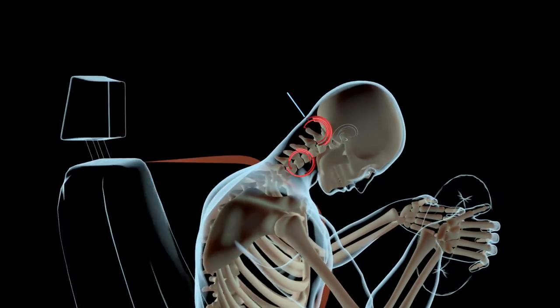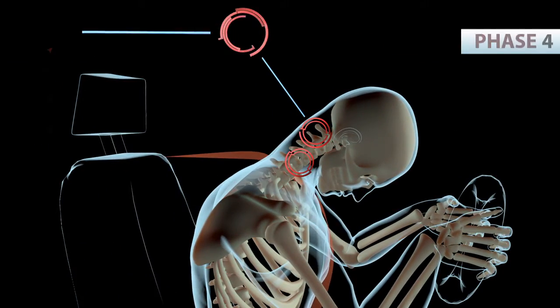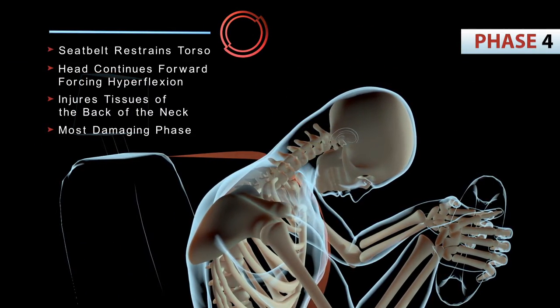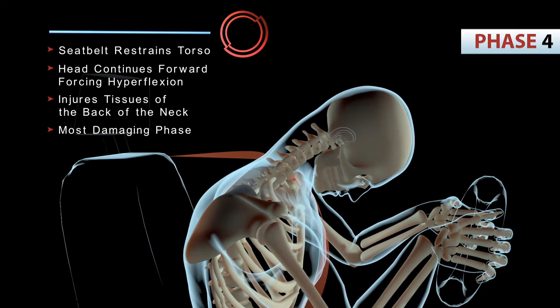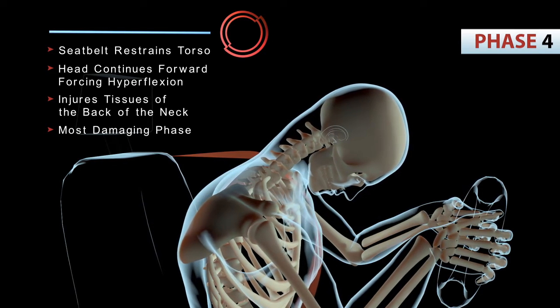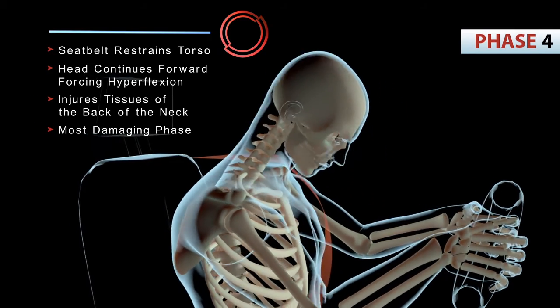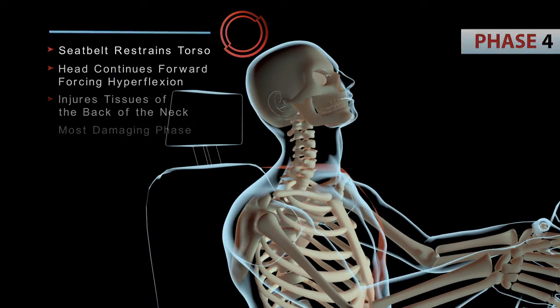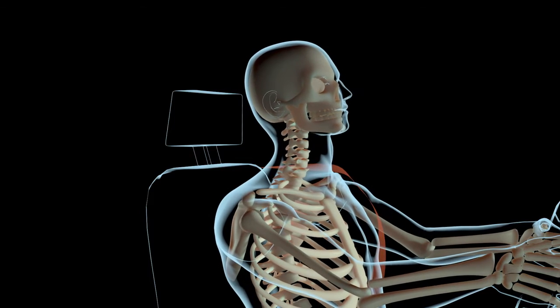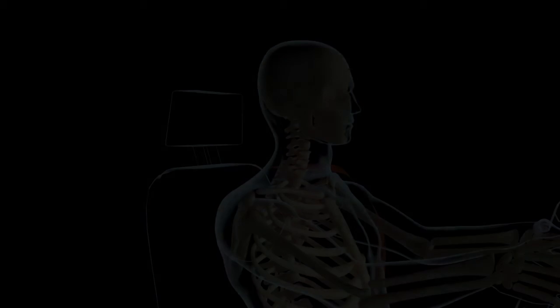In the final phase, the seatbelt restrains the torso. The head, however, continues forward, forcing the neck into hyperflexion. This injures tissues of the back of the neck, and it is widely considered the most damaging phase.